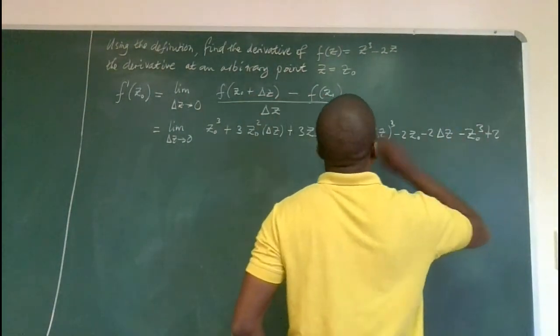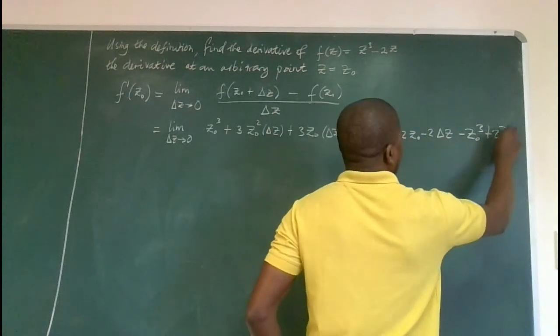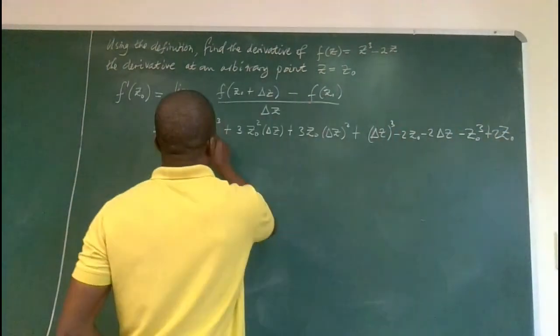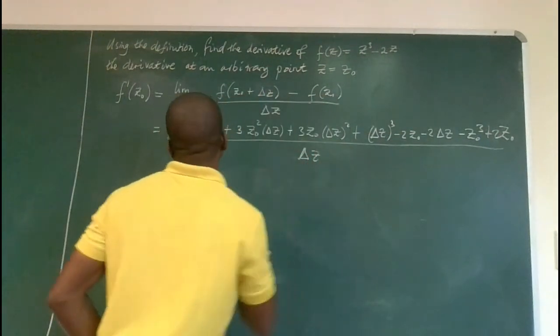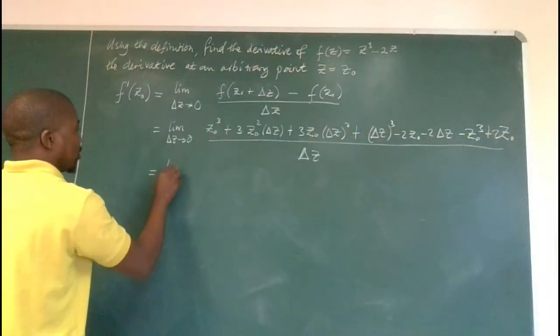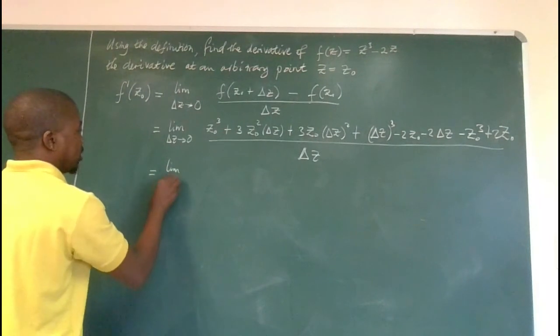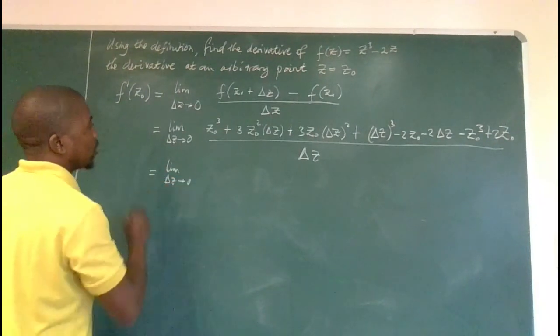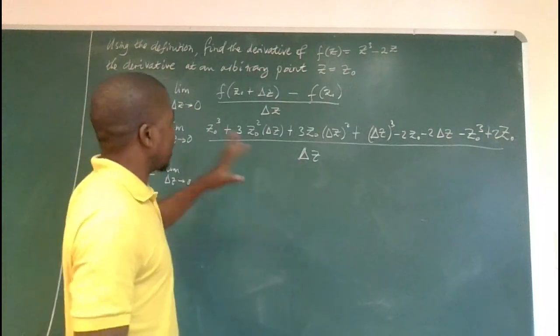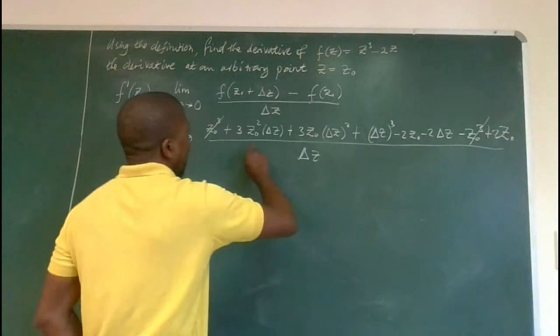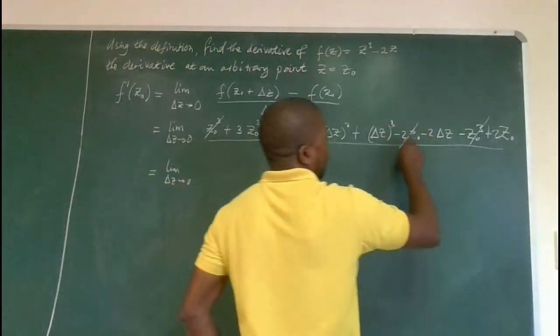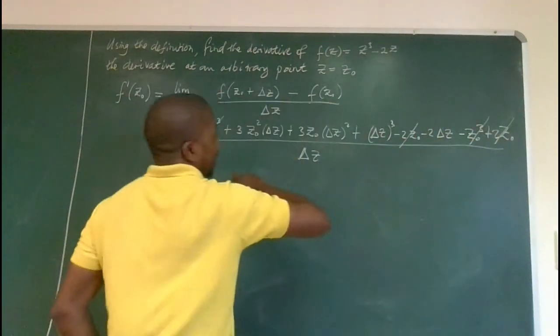But minus a minus will give us a plus two z naught, then everything divided by delta z. So this is equal to the limit as delta z approaches zero. Let's simplify these things. That z naught cubed we cancel, that z naught cubed. And two z naught we cancel that.